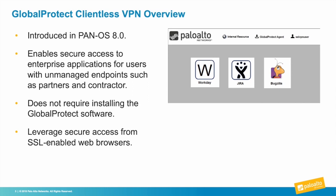Palo Alto Networks introduced GP Clientless VPN in PanOS 8.0. We did this to help you provide secure remote access to your enterprise applications for users with unmanaged devices, such as your contractors and partners. Unmanaged devices are uncontrolled by you, which means you cannot install GP Client on them. Clientless VPN leverages the SSL protection in browsers to secure the remote connection.